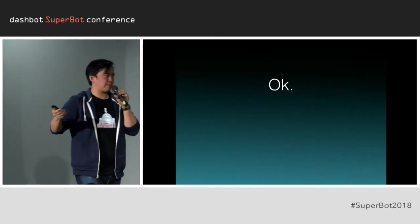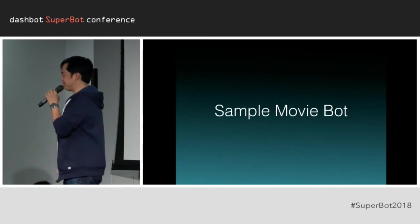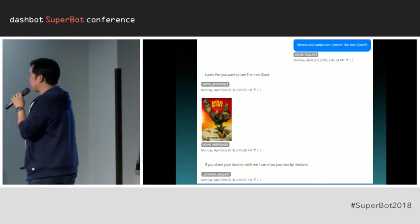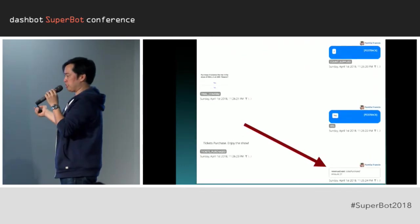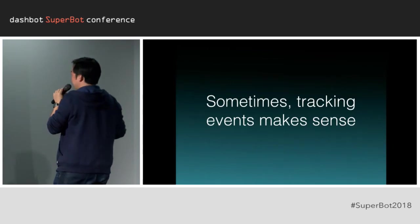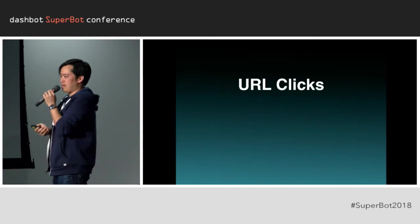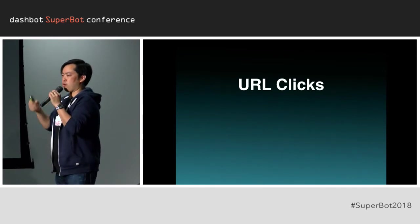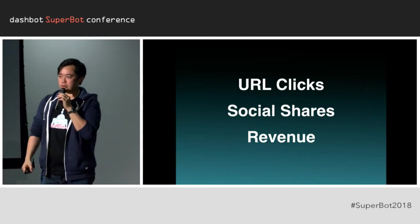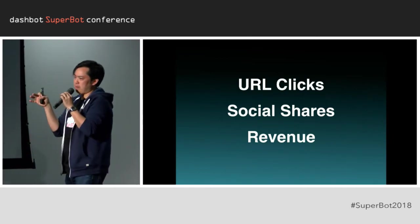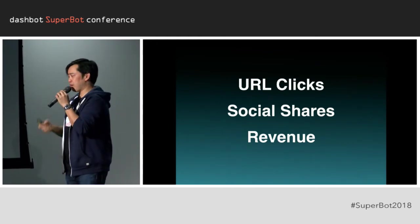I've bashed traditional analytics enough, but I want to say that some traditional analytics do work well for conversations. For example, in this sample movie bot we built, we can see people talking with the bot and sometimes making a purchase. Sometimes tracking this as an event really does make sense. Other things you can track well with events are URL clicks, social shares, and revenue — these are atomic events not quite part of the conversation, so you track them as events.